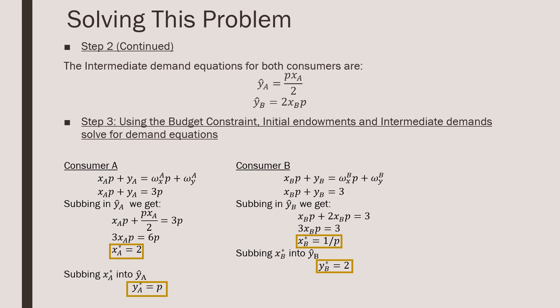For consumer B, following the same procedure, XB star equals one over P. And subbing that into YB hat, we get YB equals two.